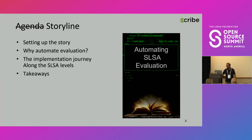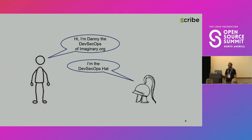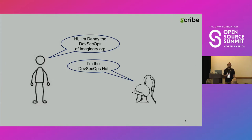So I put on my DevSecOps hat — now I'm Danny's DevSecOps and I work in imaginary.org. You know, DevSecOps gets the worst of all worlds: he's the DevOps guy so he gets woken up in the middle of the night, and he also has the 'sec' in his name so he can't be too friendly with the developers.